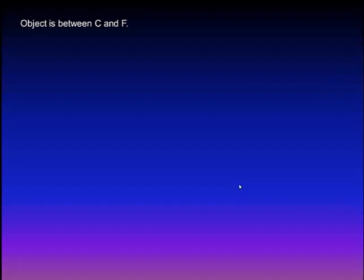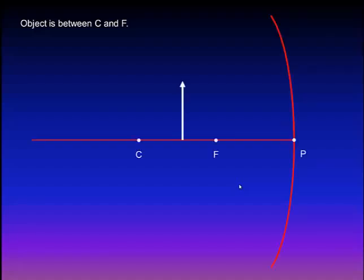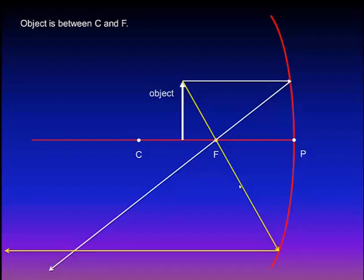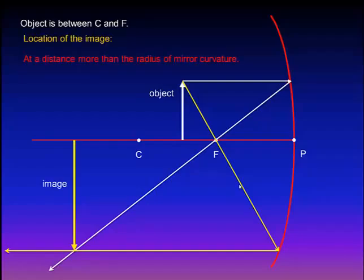The third drawing is for an object placed between C and F, or at a distance more than the focal length and less than double the focal length. We have the center of curvature, focus, and pole of the mirror. The object is located between C and F. The first light ray is parallel to the principal axis, reflected passing through the focus. The second light ray will pass through the focus and be reflected parallel to the principal axis. The intersection point of the two reflected rays will be the position of the image, formed at a distance more than the radius of mirror curvature, or more than double the focal length.